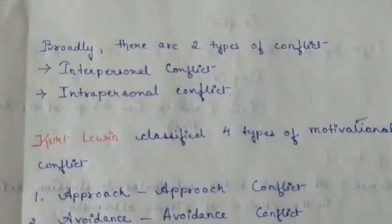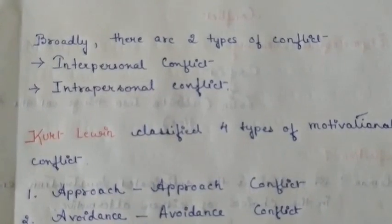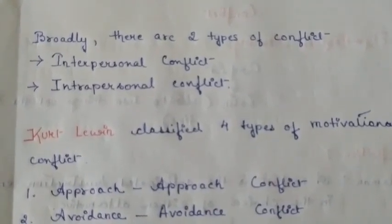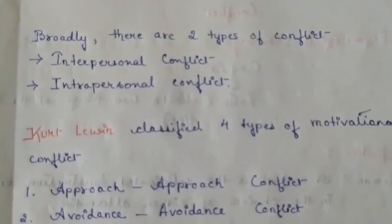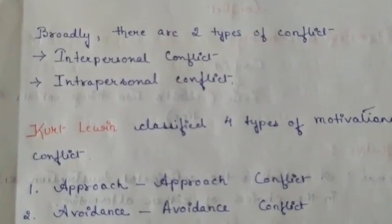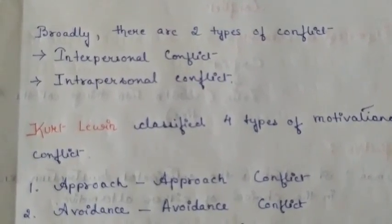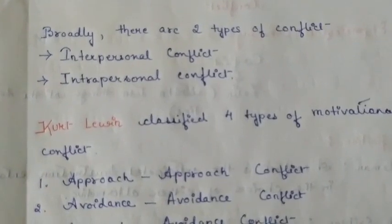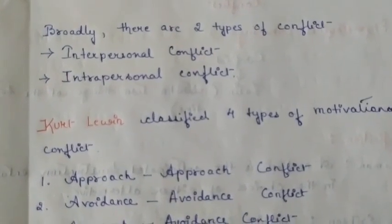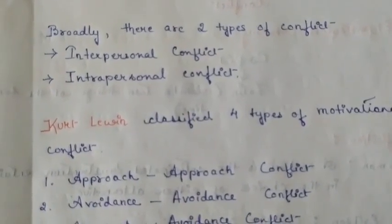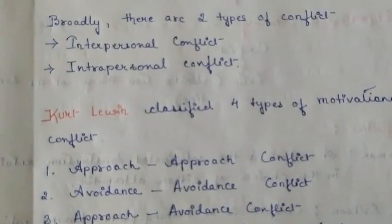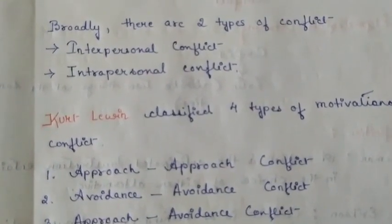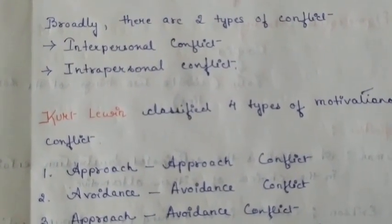Broadly, there are two types of conflict: interpersonal and intrapersonal. Interpersonal conflict occurs between two persons when there is a difference in opinions or views among people. Intrapersonal conflict is the conflict that occurs within the person.